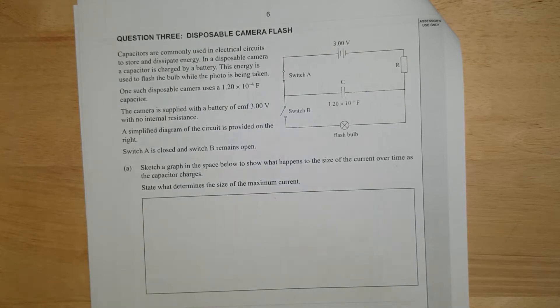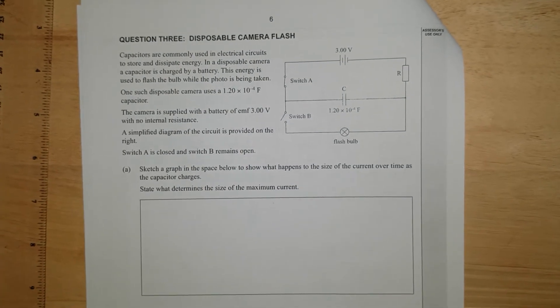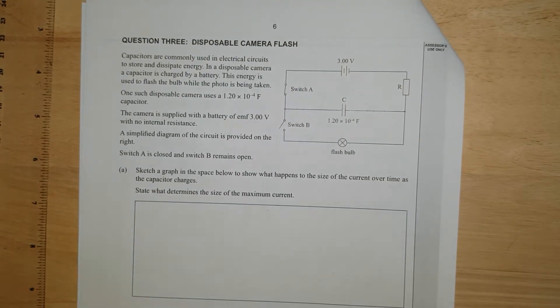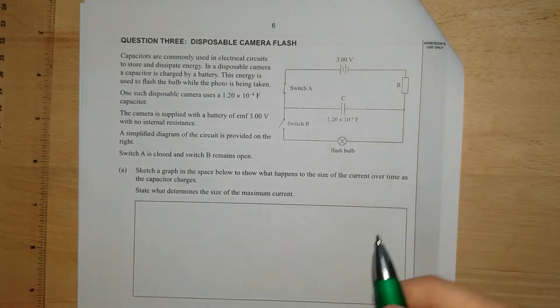Sketch a graph on the space below to show what happens to the size of the current over time as the capacitor charges. State what determines the size of the maximum current. The current is just going to decrease and decrease and decrease. I'm just going to move my camera around a little bit.